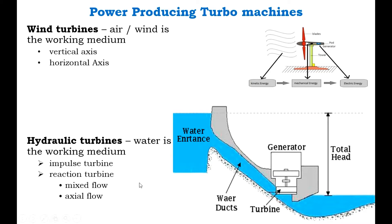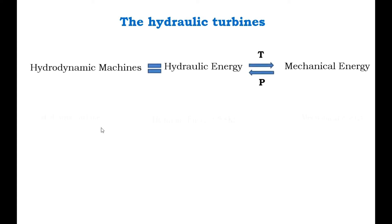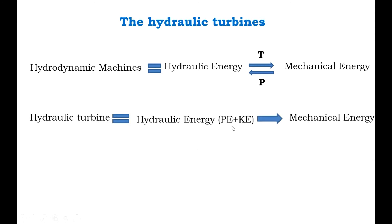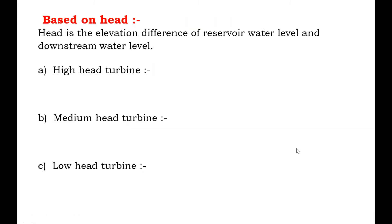In this video, the focus is on the classification of hydraulic turbines and their working. The basic working principle of hydraulic turbines is that they convert hydraulic energy — that is, potential energy plus kinetic energy — into mechanical energy. Head is defined as the elevation difference between the reservoir water level and the downstream water level. Based on the type of head available, hydraulic turbines are classified into three types: high head, medium head, and low head turbine.